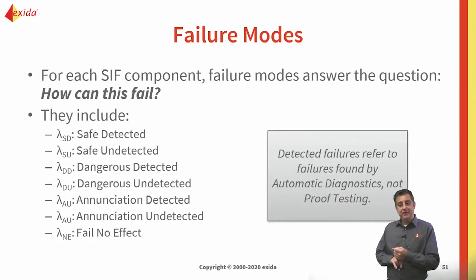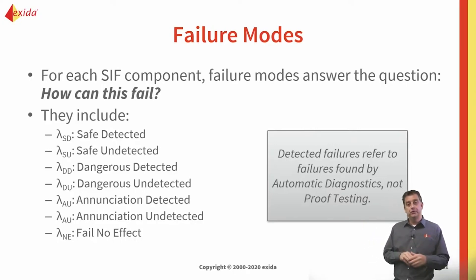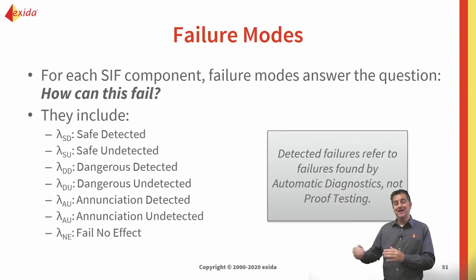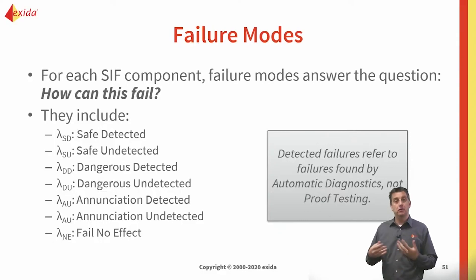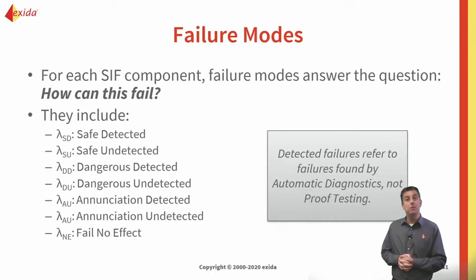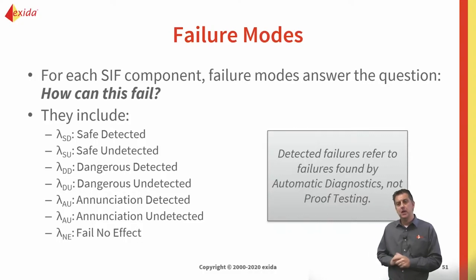There are also enunciation failures, both detected and undetected, which refer to failures of diagnostic circuitry. If the diagnostics fail in such a way that they're no longer able to identify future faults, that's an enunciation undetected failure. They could also give a false positive — indicating something is wrong even though nothing is — which is an enunciation detected failure, potentially prompting an unnecessary repair action. That gives us a total of seven failure rate categories typically considered in SIL verification.